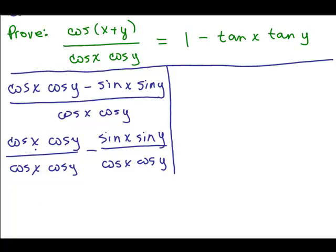All right, so let's look at the first fraction. We've got cosine X cosine Y over cosine X cosine Y. Well, that's going to be one. That's going to completely cancel, right? One over one. So that'll give me a one minus, and what do I have here?